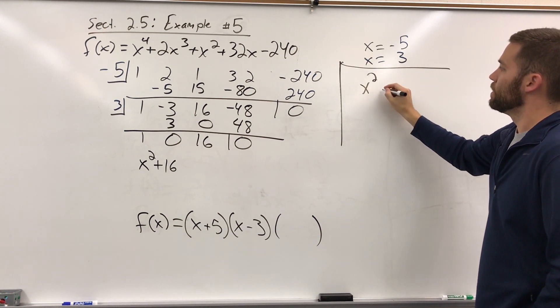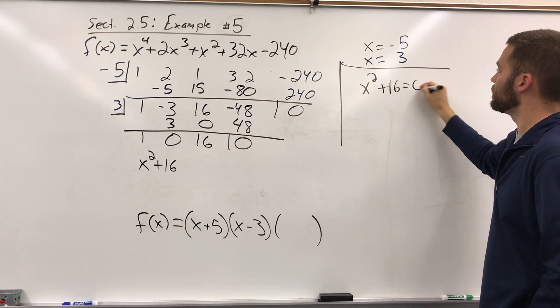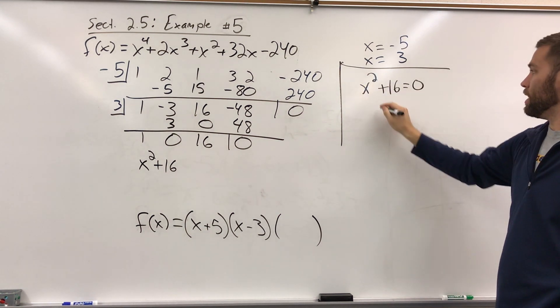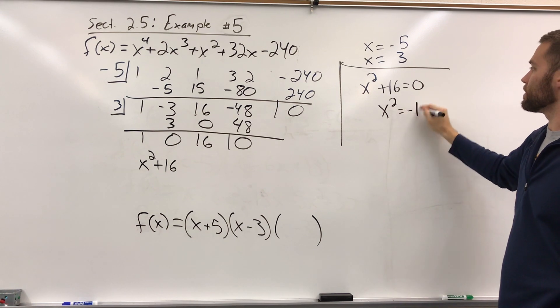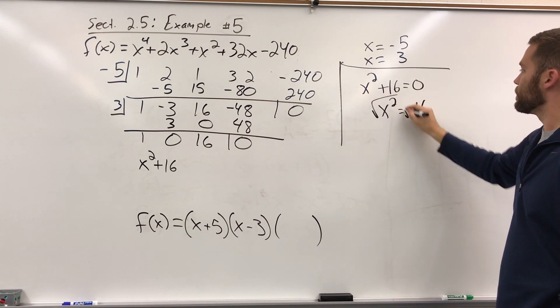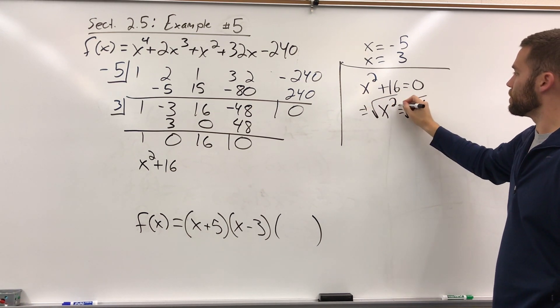So we'll go x squared plus 16 is equal to 0, subtract 16 over, I get x squared equals negative 16. Square root, square root, it's square root of a variable, so you can get plus or minus.